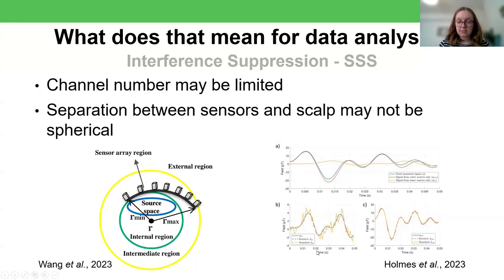So particularly, I just want to highlight if you look at figure B here, this is the internal space. So this blue line is the true brain signal. The orange line is the iterative SSS solution. But the yellow line is this SSS solution without any optimization for OPMs. And you can see quite how unstable it really is.